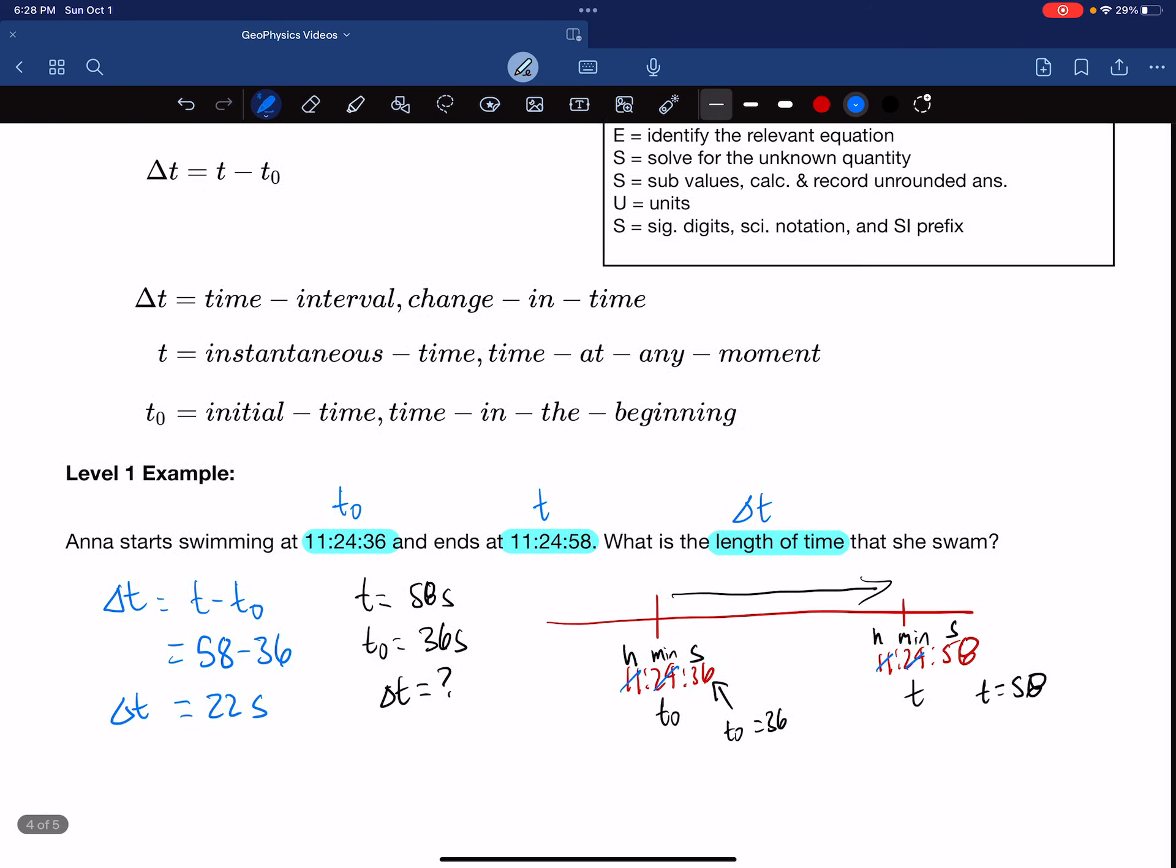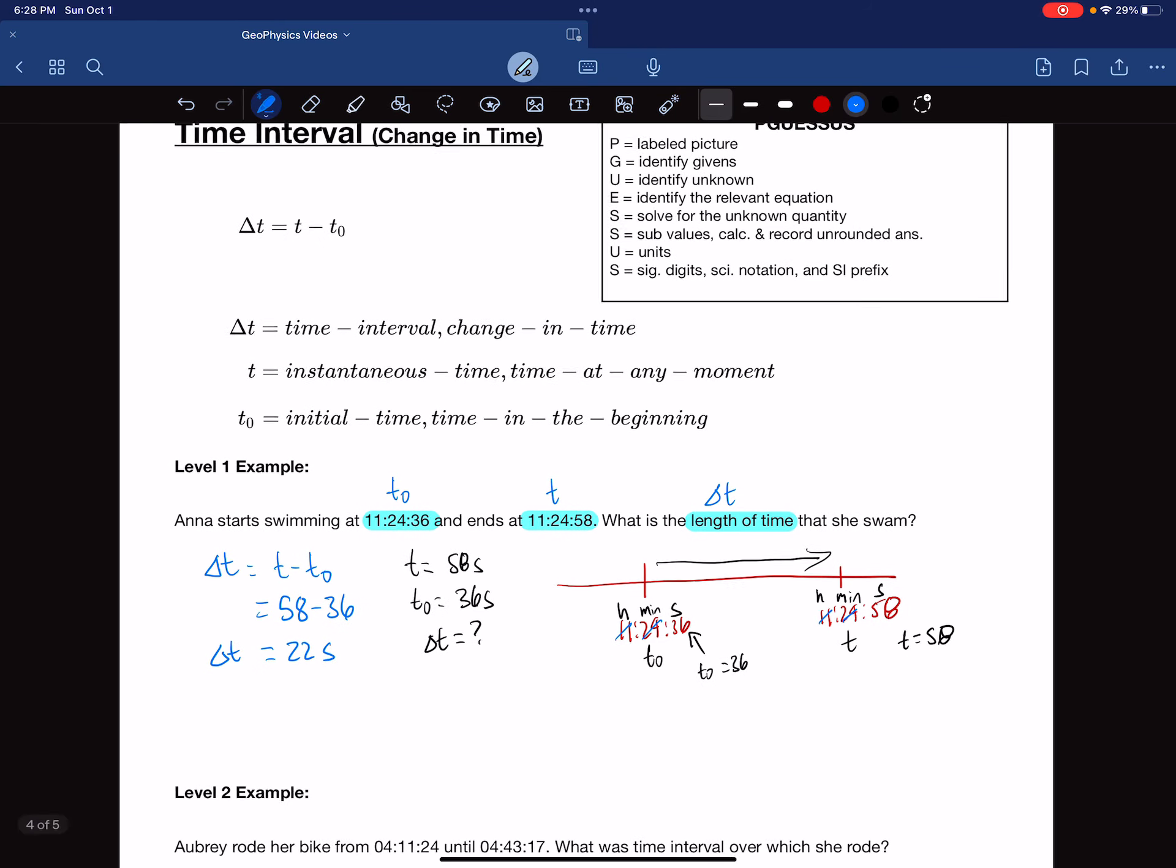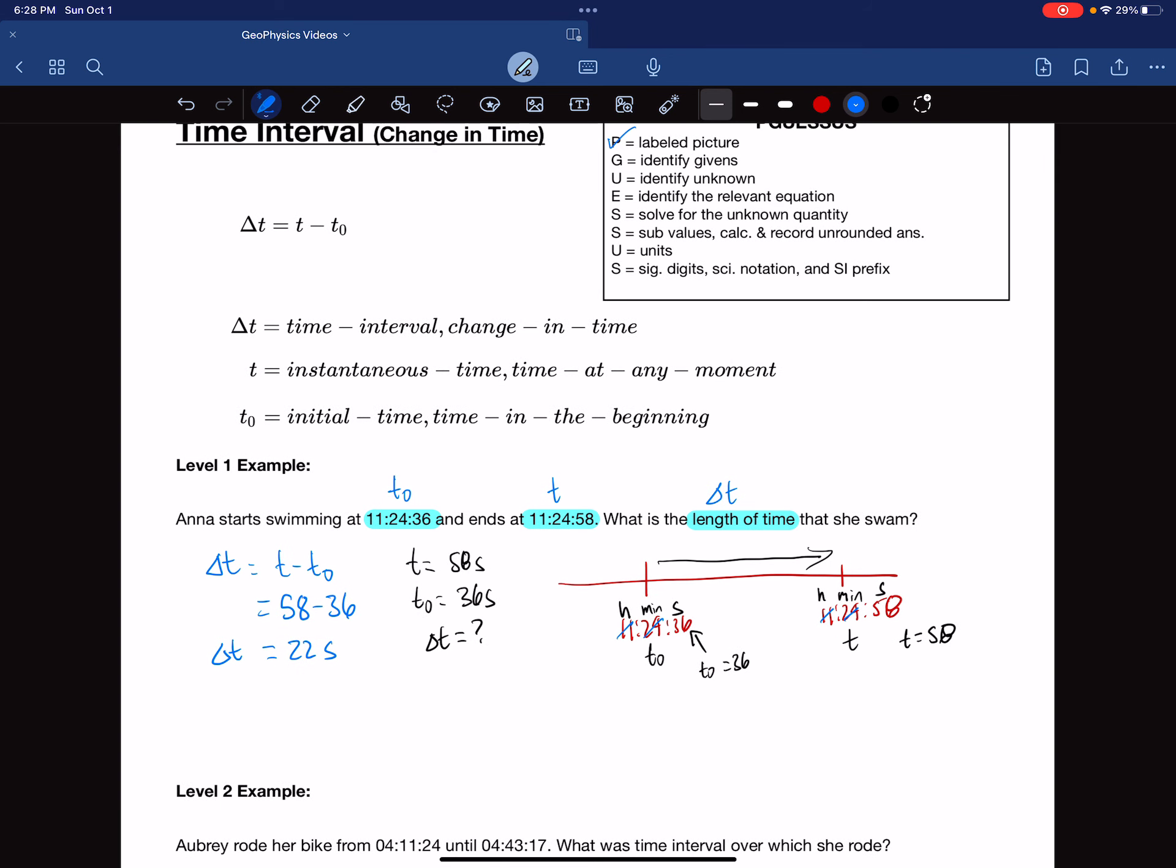Now, using our Pegasus method, we can say we had to have a labeled picture. We listed our givens. The unknown was delta t, so we already had an equation for it. So we list the relevant equation. We solved for the unknown. We don't need to. And we substituted the values. We calculated and recorded the unrounded answer, which was 22, the units and seconds.